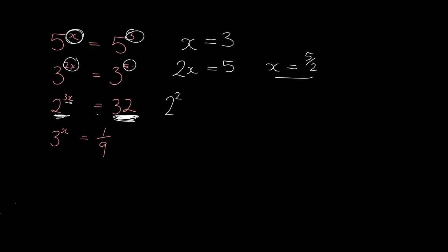Well, that's quite easy. Sorry, let's just get this right. We know that we've got 2 to the 3x and we've got 32. And you should know that that is 2 to the power of 5.